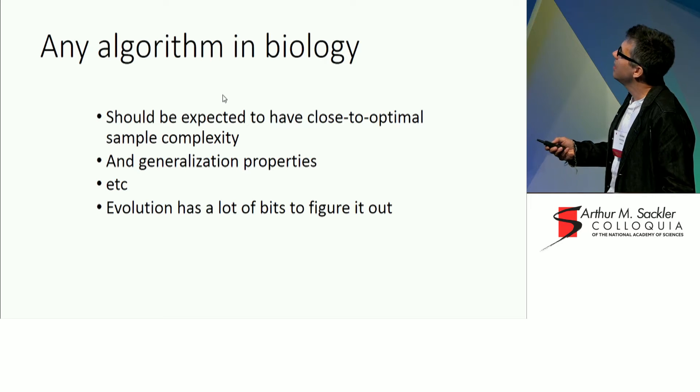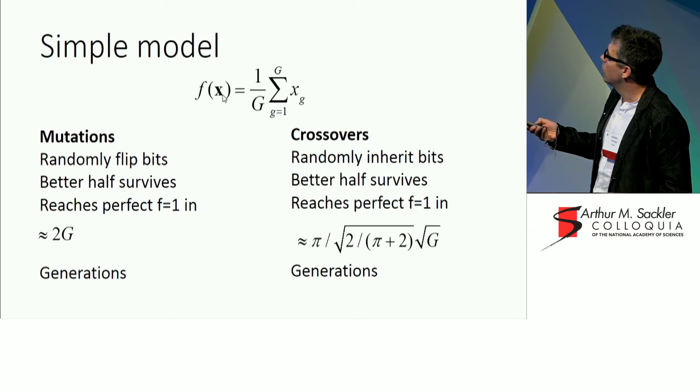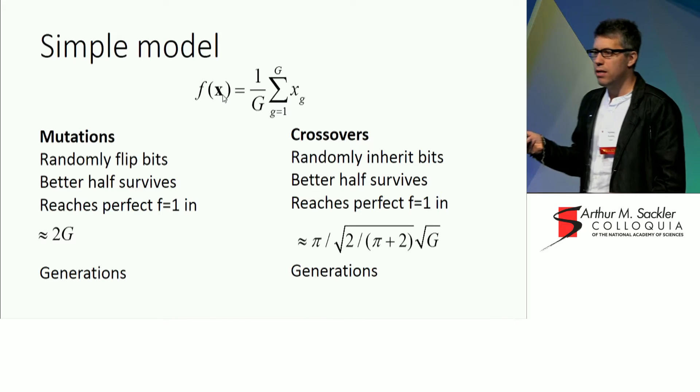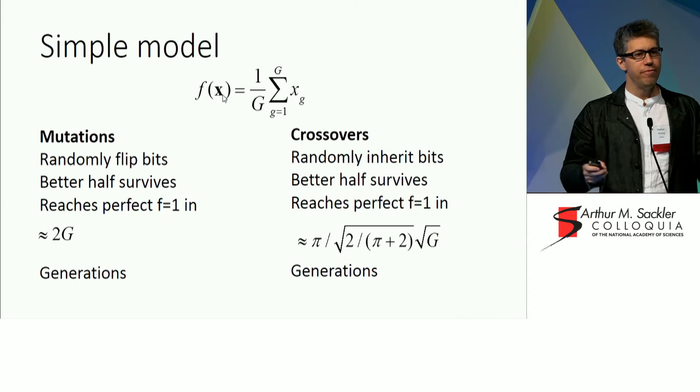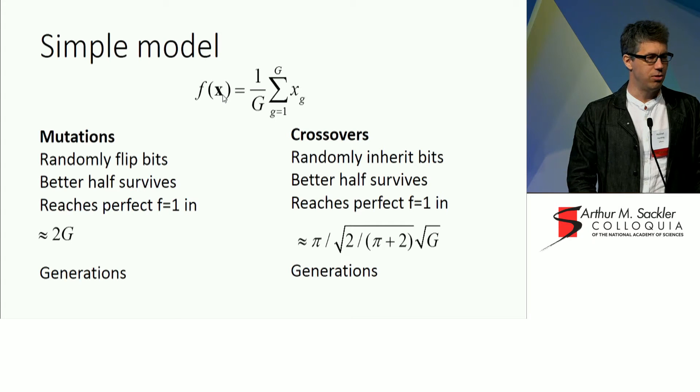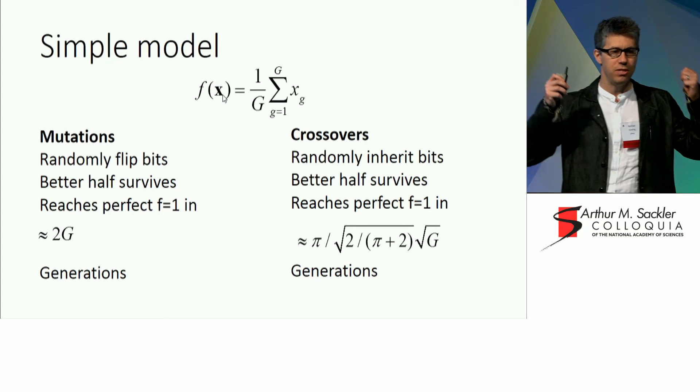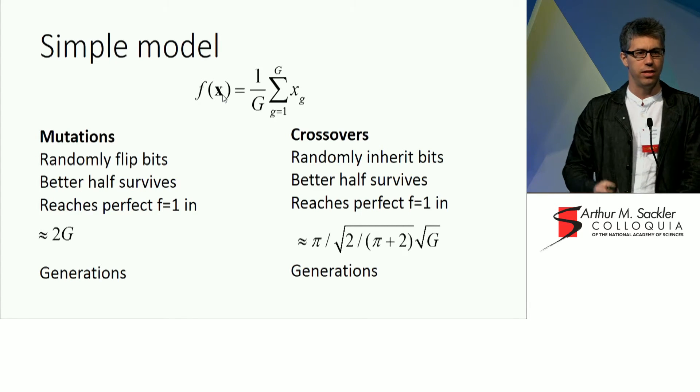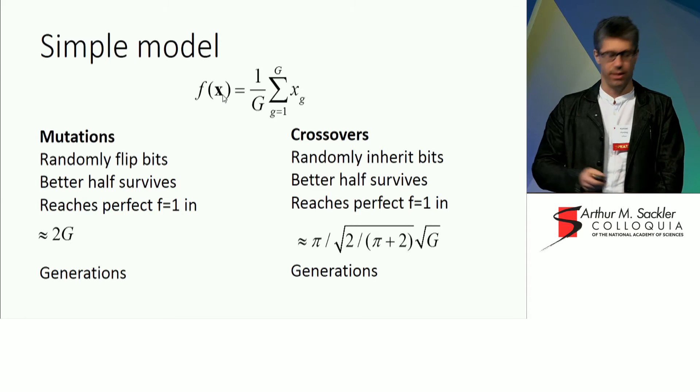Every kid in the new generation inherits half of the bits from each of its two parents. And the better half survives just as in the same case. In that case, we reach the perfect genome in pi over square root of two pi plus two times square root of G generations on average. Now, why is this awesome? The first thing is it's pi day. And I'm irrationally excited about it. The second one is, look, we are square root of G faster.